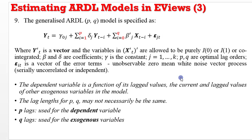As a continuation, on the screen you can see the generalized form of the ARDL(P,Q) model. The P's are the lag length associated with the dependent variable, while the Q's are the lag length associated with the explanatory variables. The lag lengths P and Q may not necessarily be the same — P can be lag 1, lag 2, while the Q's can take any figure.